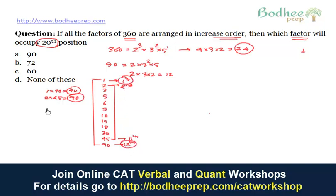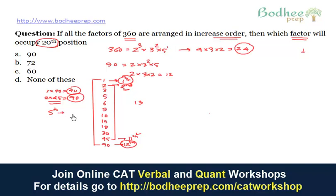So the 2nd factor pairs with the 11th factor. If we ask which factor pairs with the one at the 5th position, it will be the factor at the 8th position, because the sum of these positions should be 13.